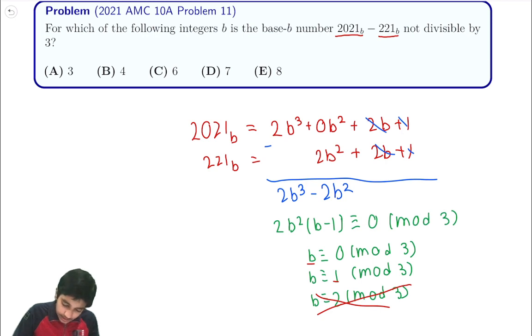Out of these answer choices, E is the only value that is 2 mod 3, and that's the answer. Because 3 is 0 mod 3, 4 is 1 mod 3, 6 is 0 mod 3, 7 is 1 mod 3, and 8 is 2 mod 3.